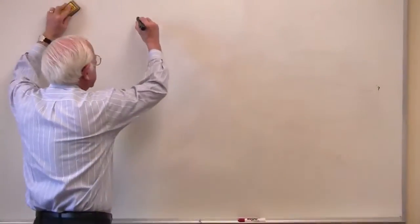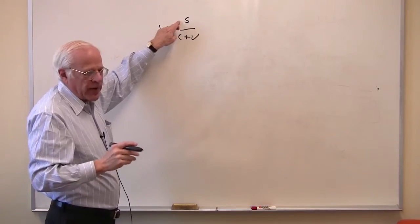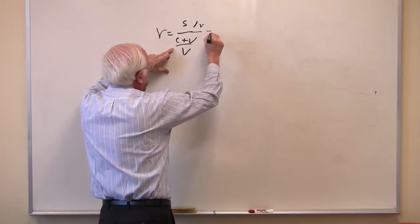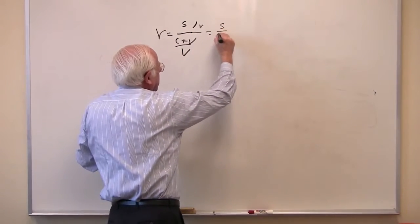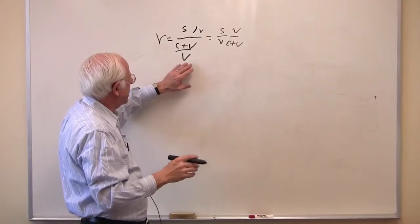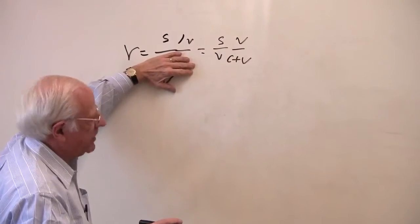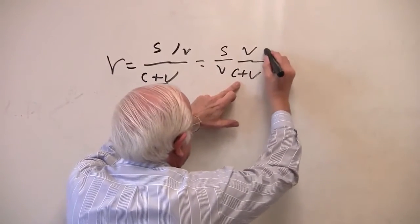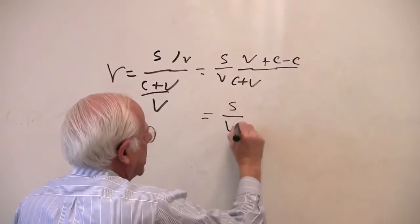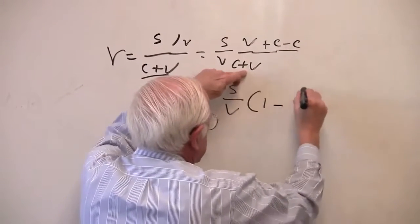The next step is to combine these into one formula useful to analyze capitalism. The rate of profit is surplus divided by the cost of capital. Divide the numerator and the denominator by the value of labor power V. Rewriting this gives S over V, times V over C plus V. You can do a bit of algebra: multiply through and add and subtract C, so C minus C is zero, and rewrite as S over V times one minus C over C plus V. So now I have a formula for the rate of profit which combines my two other indices.